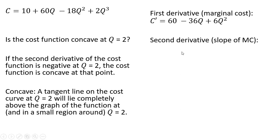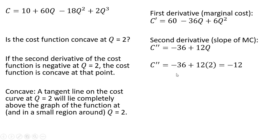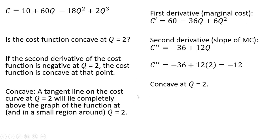Taking the derivative of the derivative — the second derivative — we get minus 36 plus 12q. We evaluate that at q equals 2: minus 36 plus 24 equals minus 12. The second derivative is negative, so where q equals 2, the graph of the cost function is concave.